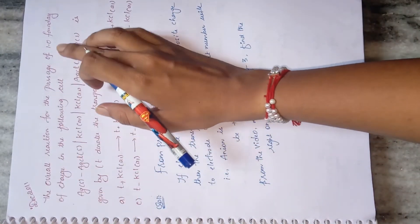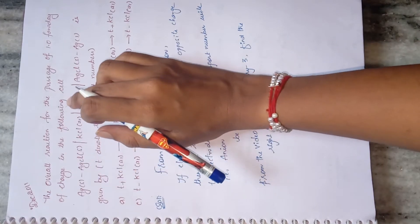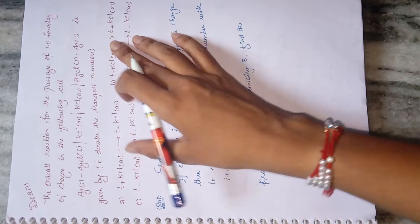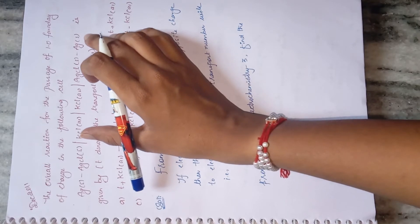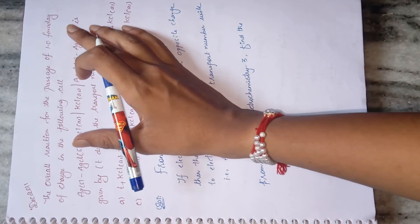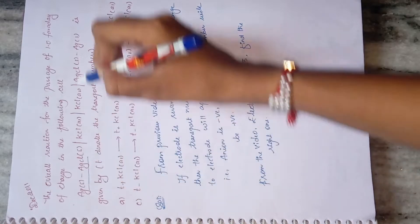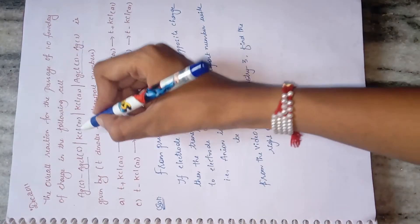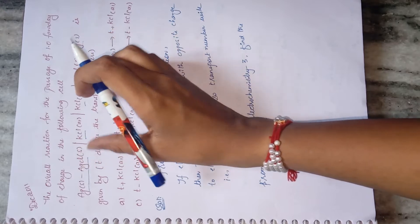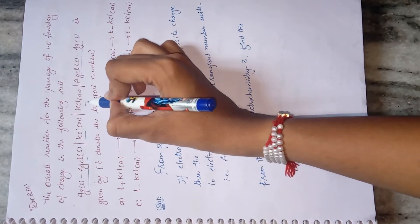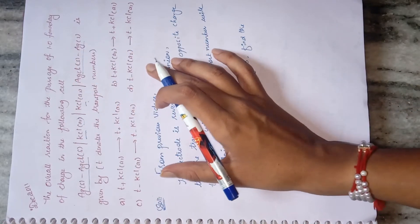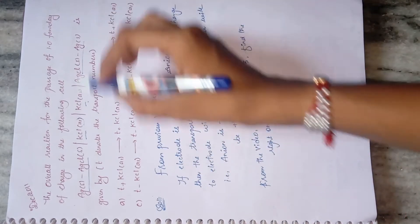Now the December 2011 question: the overall reaction for passage of 1.0 Faraday of charge in the given cell. As soon as you see the question, identify which kind of cell it is. Here the electrodes are the same, and there is a change in electrolyte concentration. Hence this is an electrolyte concentration cell.